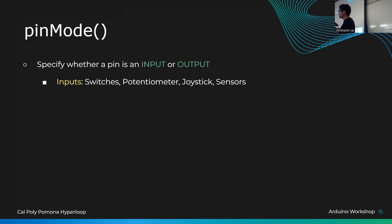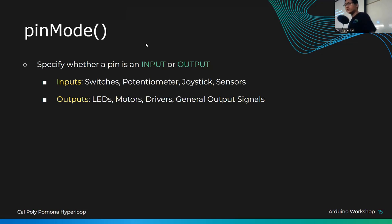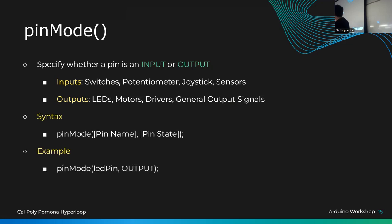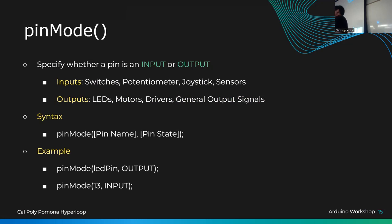Inputs include switches, potentiometers, joysticks, and sensors. Outputs include LEDs, motors, drivers, and general output signals. The syntax for `pinMode` allows you to reference a pin by either the variable name you defined or the raw pin number. Using a variable name makes code readable — if you just have a bunch of numbers it's hard to understand, which is similar to why assembly is difficult to read.